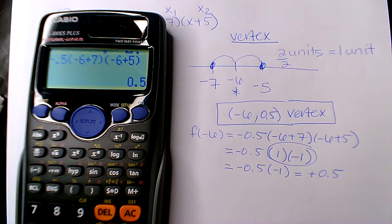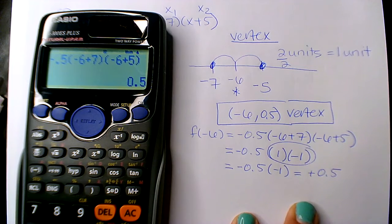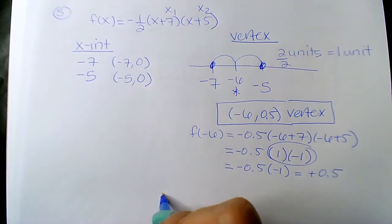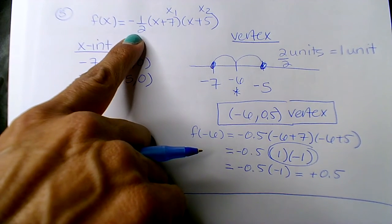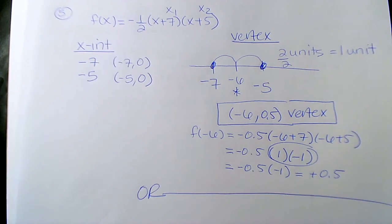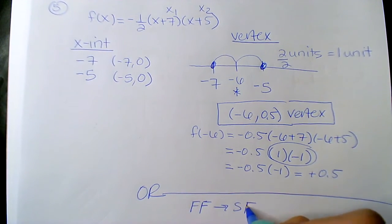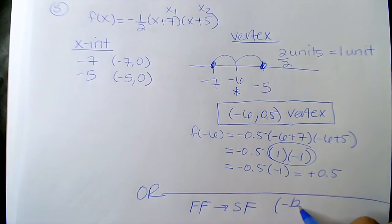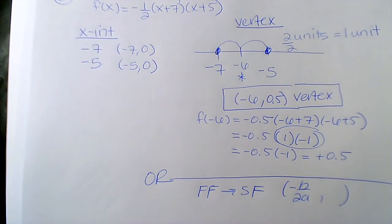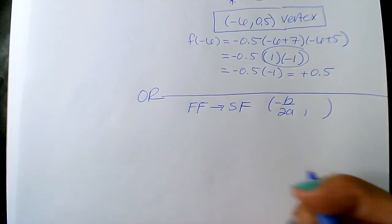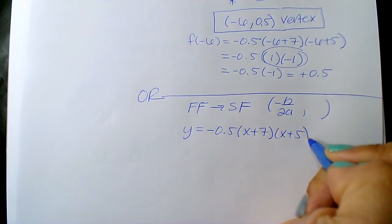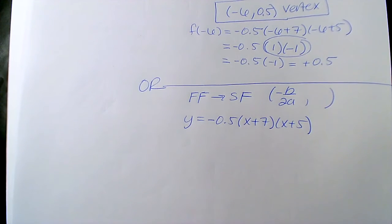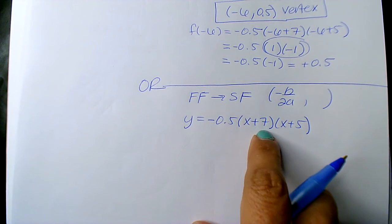Now the long way — because there are a few of you choosing this method. If you don't want to do it this way, or the numbers confuse you, this is the long way. You can take the factored form and expand it out to standard form, and then use minus B over 2A to get your vertex. So negative 0.5 times (x + 7)(x + 5). If you're really good at distributing or foiling, this is actually really quick.